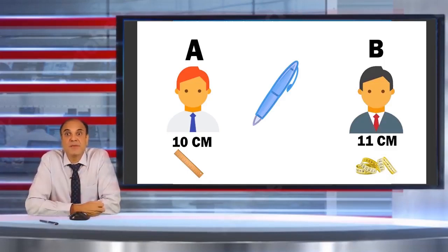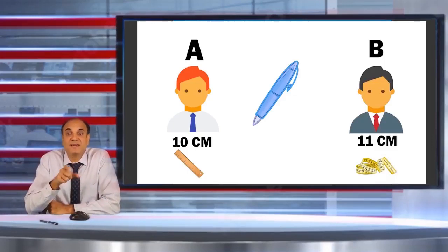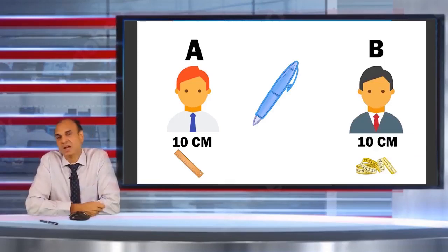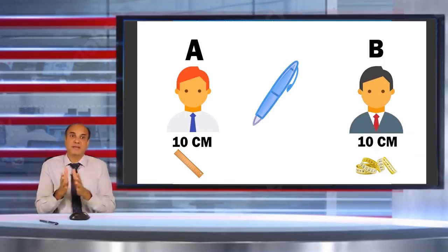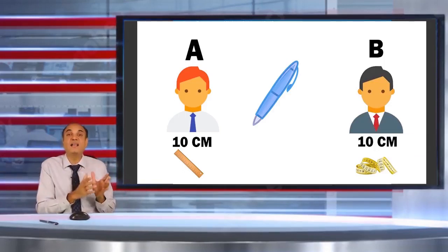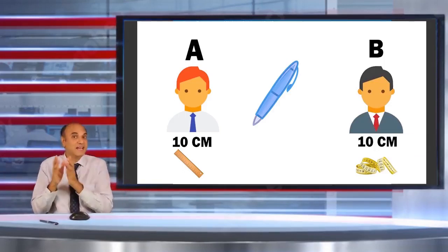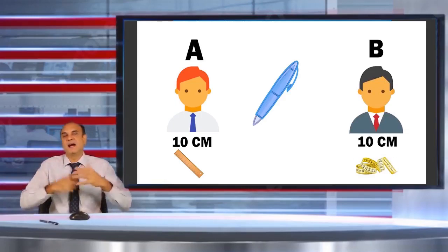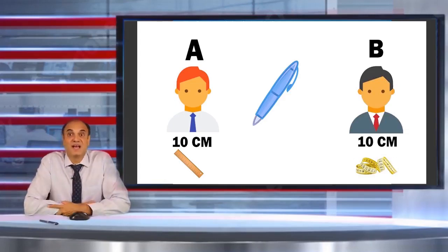Reproducibility means other people, other instruments, or other labs get the same result you get when measuring the same item or characteristic. So when different people, different instruments, and different labs are all giving the same readings, I would say that my measurement system is reproducible.